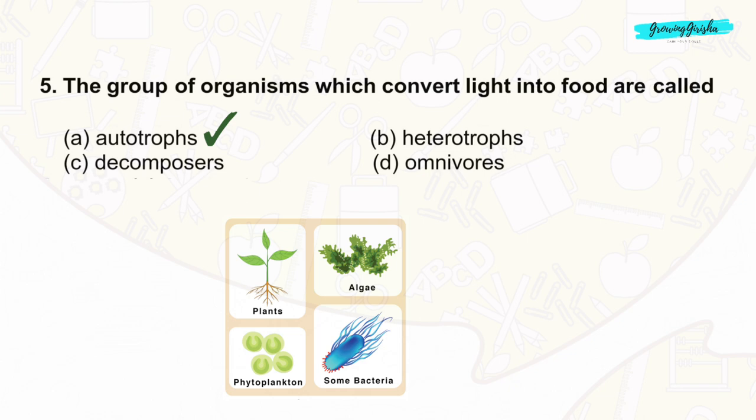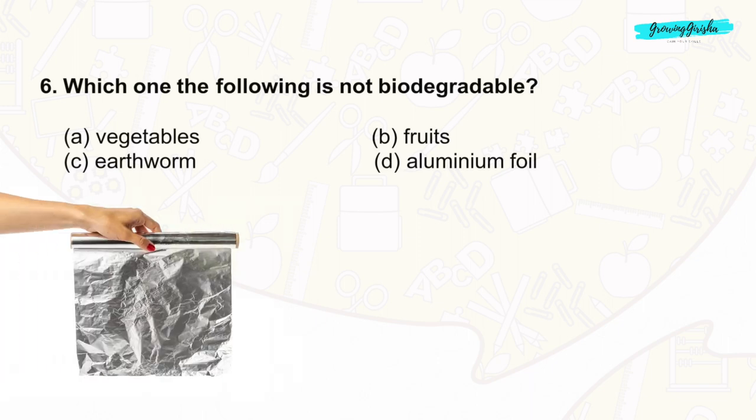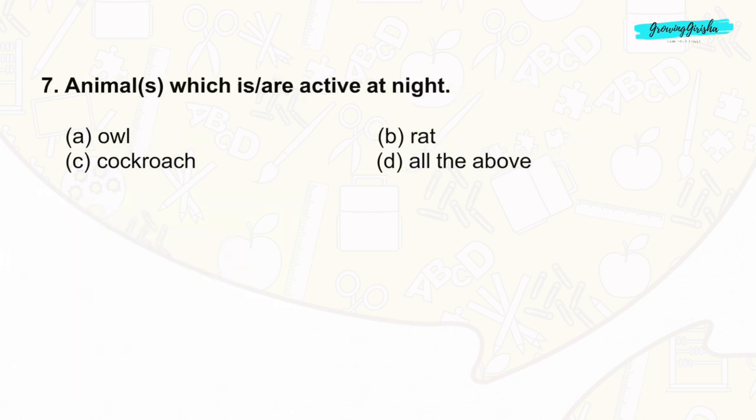Question 6: Biodegradable refers to materials or substances that can be broken down naturally by biological processes. Among the options, aluminum foil is not biodegradable.